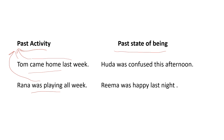Here are the examples of past state of being. Buddha was confused this afternoon. Rima was happy last night. These are states of being — confused and happy — and when did it happen? It happened in the past, so it's past state of being.